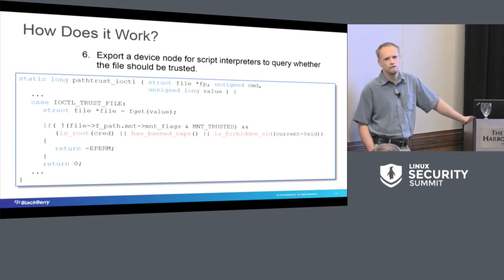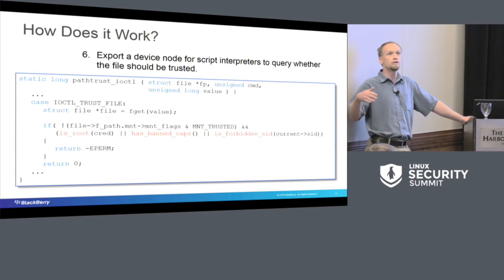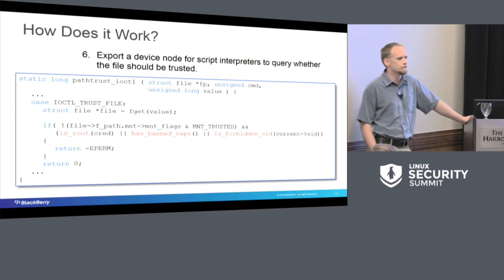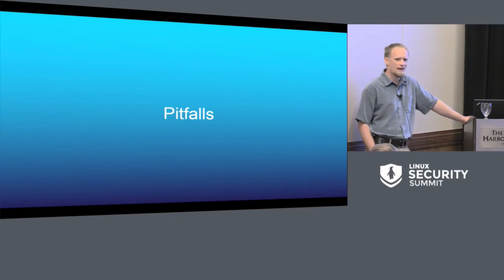So we go through, and now we have something mounted as trusted because we've passed the trusted flag to mount, and it is trustable. Then we just intercept the Linux security module calls to the various functions that we need to implement. If we're trying to run with super user permissions, verify that the underlying file system is trusted. Then export a device node so that other people can query and say, I'm going to try and run this file. Is this file something that I should be running?